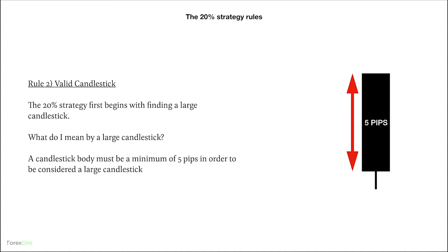You're going to hear me say 'large candlestick' many times when explaining the 20% strategy. Just for clarification, the large candlestick means a candlestick with a body that is a minimum of five pips. It's the first candlestick in our system that meets that requirement — that's what we consider the large valid candlestick.